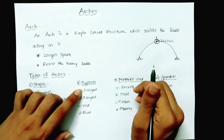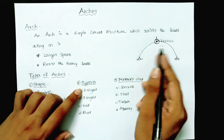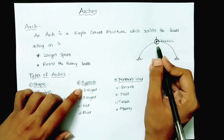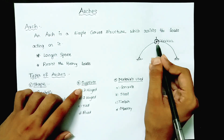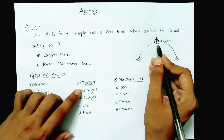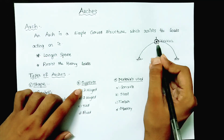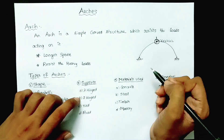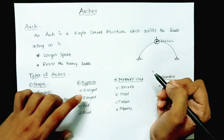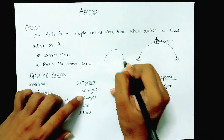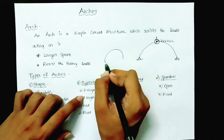In a three hinged arch, the moment at the internal hinge point is equal to zero, since it is a hinged support — also known as an internal hinge. The second type is the two hinged arch: there is one support at each end but no internal hinge, so there are only two hinges in the arch.